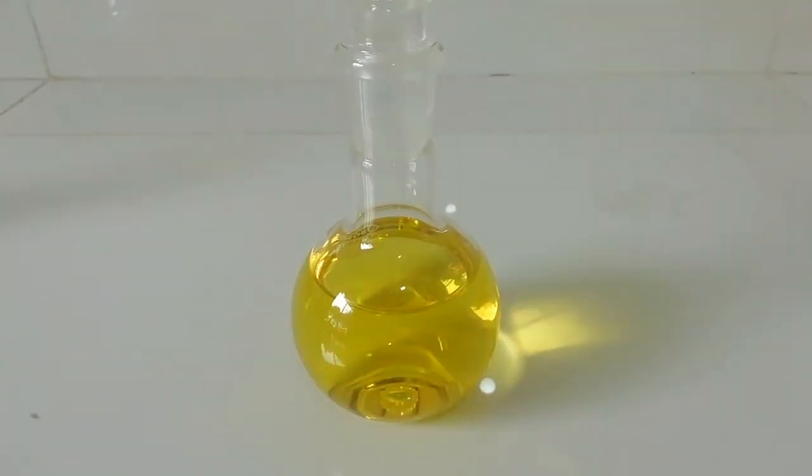We need to shake this flask. When I shake this flask, the oxygen in the flask reacts with the indigo carmine indicator and it varies the oxidation states. Therefore according to the oxidation state, the color will change.